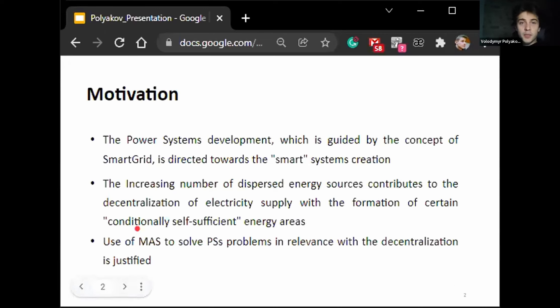The power systems development, which is guided by the concept of smart grid, is directed towards smart system creation. The global vector of power systems development is carbon-free energy, and this implies relentless growth of the total capacity of renewables used in power systems. The increasing number of dispersed energy sources contributes to the decentralization of electricity supply with the formation of certain conditionally self-sufficient energy areas. Such decentralization creates many problems that need to be solved in real time, taking into account coordination of control actions between neighbors.